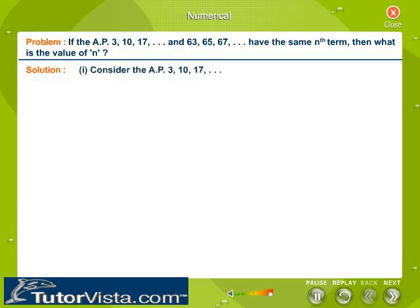Solution: Consider the AP 3, 10 and 17. First term A is equal to 3 and the common difference is 7. We know that Tn is equal to A plus n minus 1 into D. Substitute the values of A and D and obtain the equation of Tn.